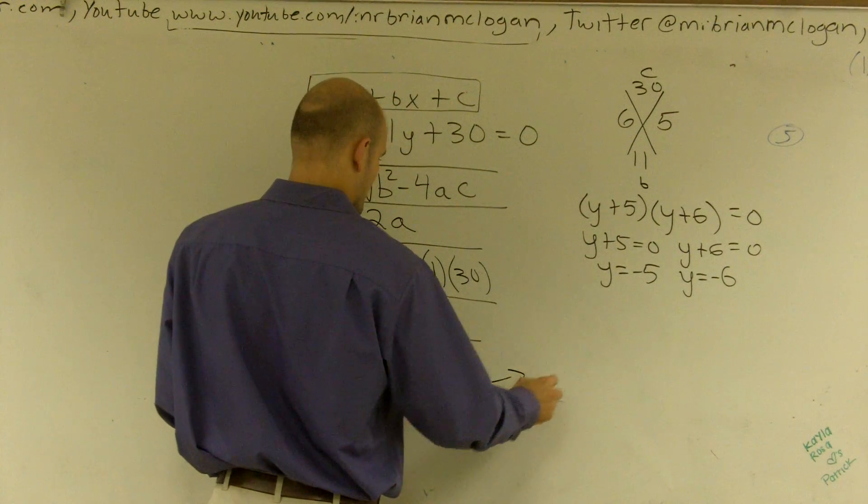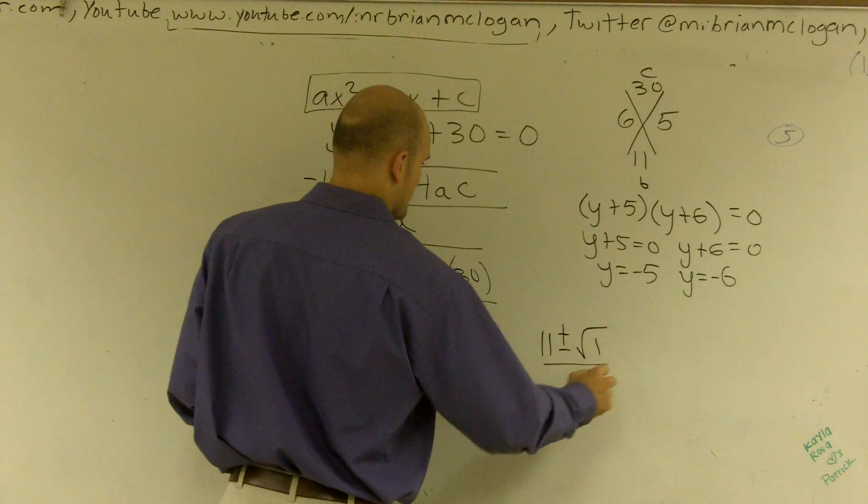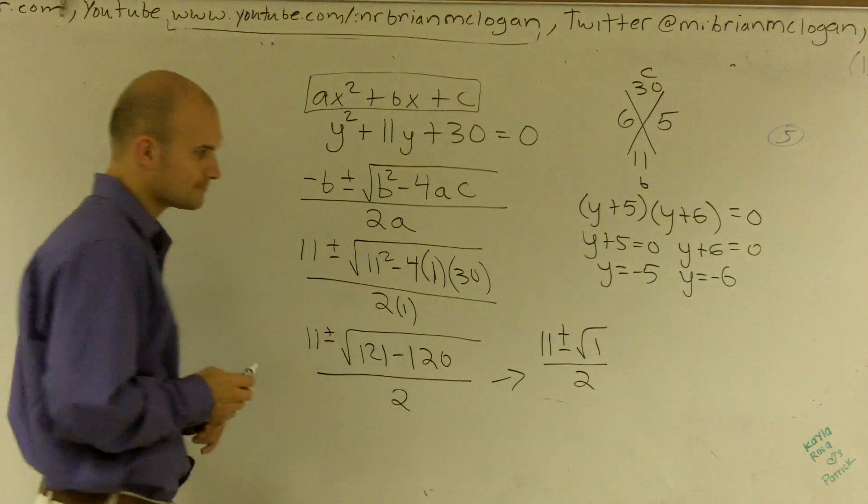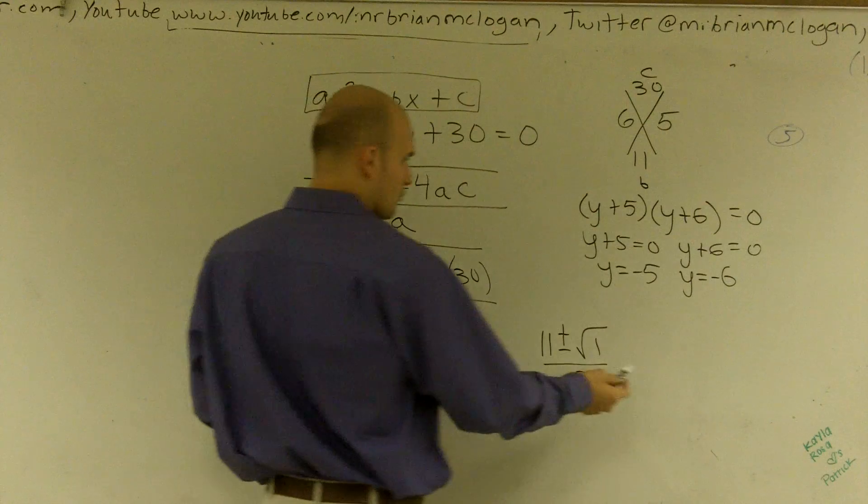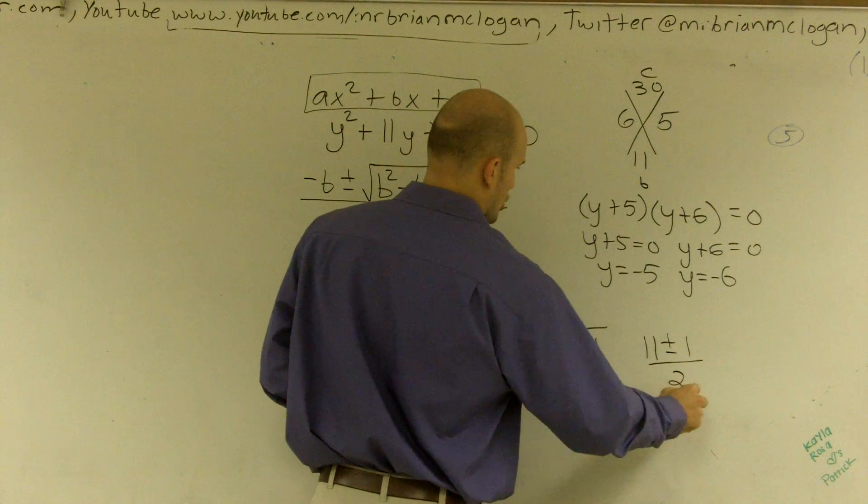So 121 minus 120 is going to be 1. So therefore, let's work over here. I have 11 plus or minus the square root of 1 over 2. And the square root of 1 is obviously 1, right?